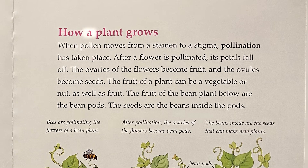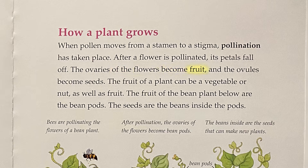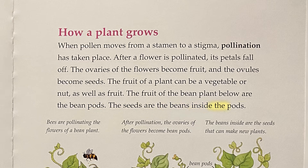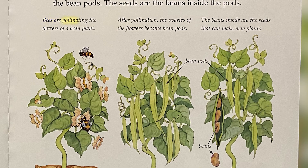How a plant grows: When pollen moves from a stamen to a stigma, pollination has taken place. After a flower is pollinated, its petals fall off. The ovaries of the flowers become fruit, and the ovules become seeds. The fruit of a plant can be a vegetable or nut, as well as fruit. The fruit of the bean plant are the bean pods. The seeds are the beans inside the pods. Bees are pollinating the flowers of a bean plant.